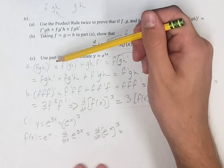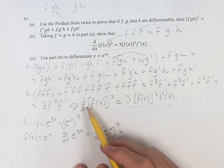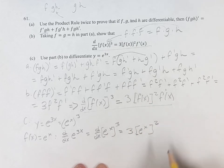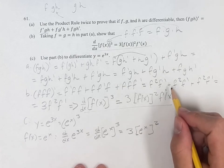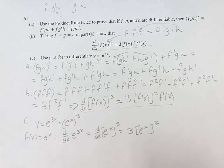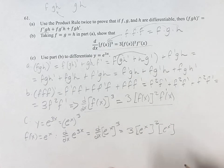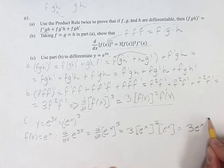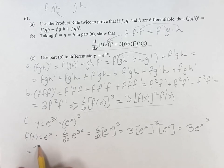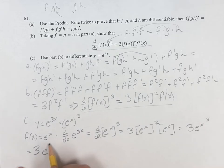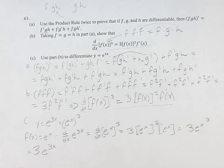By using part B, we know this is equal to 3 times f of x — which in this case is e to the x — squared, times the derivative of f of x. Well, f of x is e to the x and the derivative of e to the x is just e to the x. So last step: we have 3 times e to the x squared, times another e to the x, so that's e to the x cubed. And this is equal to 3e to the x times 3 — when taking a power of a power you multiply the exponents — so we get 3e to the 3x.